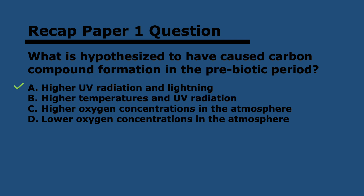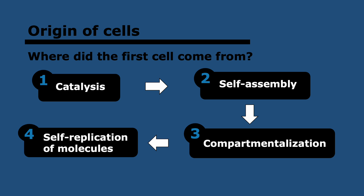Once again, there were lower oxygen concentrations in the atmosphere, but that wasn't the cause for chemical reactions to occur. You will know that cells can divide and create other cells, so cells can be traced back in history. However, the first cell must have come from somewhere — the same way carbon compounds emerged at some point, the same thing applies to cells.